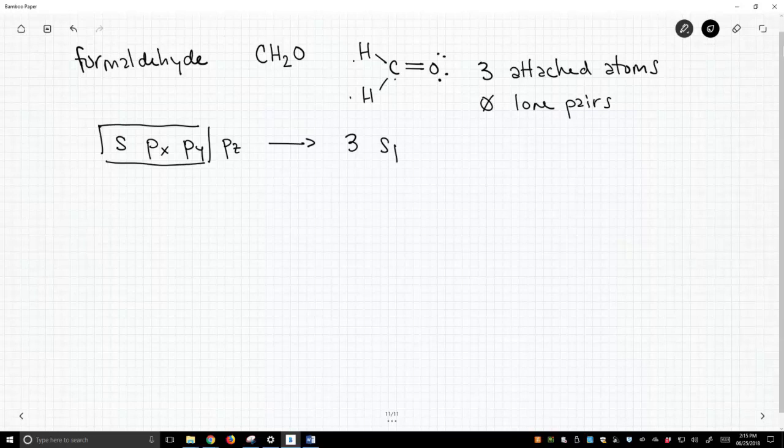And so we're going to get three sp2 hybrids, sp2 because they're one part s and two parts p, plus a leftover unhybridized p orbital, specifically the pz orbital.